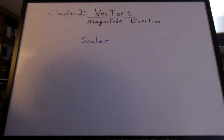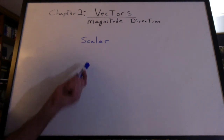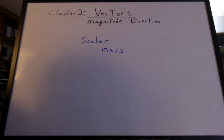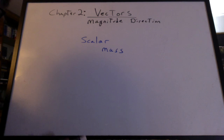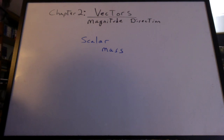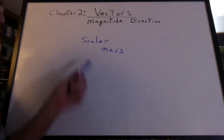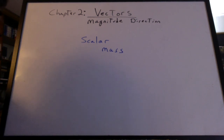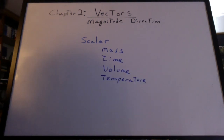A quantity that does not have a direction is called a scalar. Some quantities you can put a direction to — like distance; if you put a distance with a direction, it becomes a vector. But if you have a mass, you can't put a direction to it. If something has a mass of five kilograms, it's got a mass of five kilograms — there's no direction associated with that, so it can only be a scalar. Other scalar quantities include time, volume, and temperature.